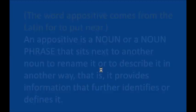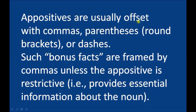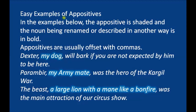Appositives are usually offset with commas, parentheses (round brackets), or dashes. Such bonus facts are framed by commas unless the appositive is restrictive — that is, provides essential information about the noun. So appositives are bonus facts and they provide essential information about the noun.